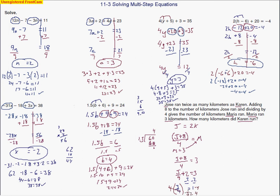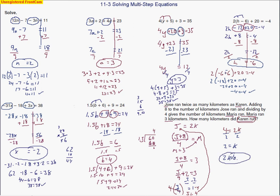But they want to know Karen's distance. Since Jose equals 4 and j equals 2K, we put 4 back in: 4 equals 2K. Dividing by 2, Karen ran 2 kilometers. Those are typical types of problems you'll see on tonight's homework. Good luck.